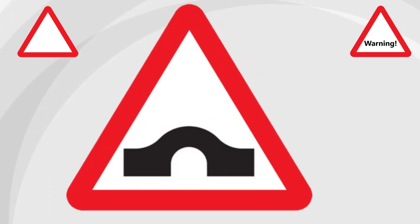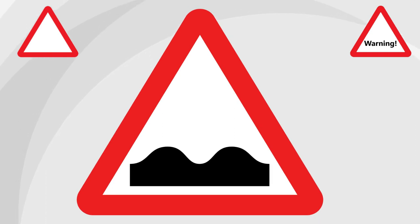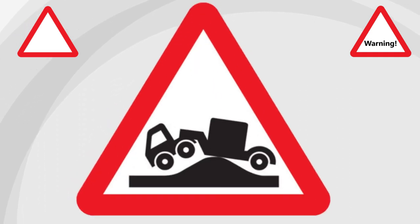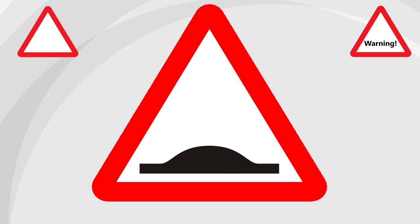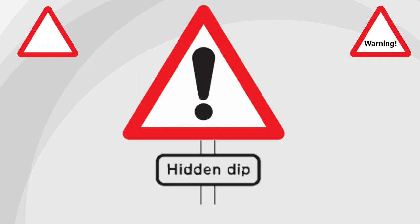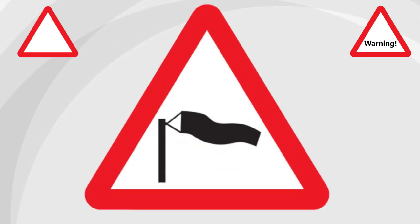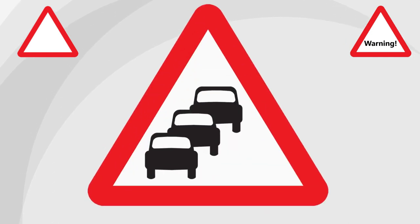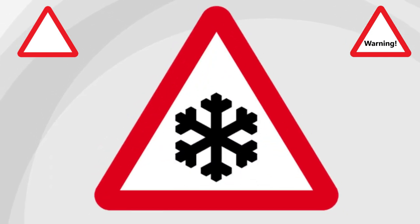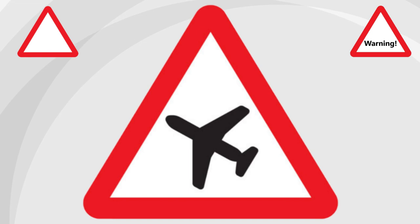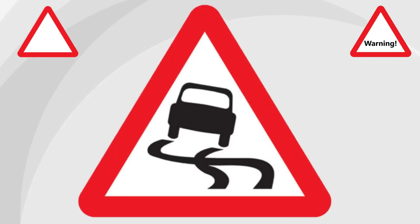Hump bridge. Uneven road surface. Quarry side or river bank. Risk of grounding. Humps in the road ahead. Any other warning — you will usually find a plate underneath the sign with the type of hazard. Soft verge. Side winds. Queuing traffic. Risk of ice. Height restriction ahead. Low flying aeroplanes. Slippery road surface.